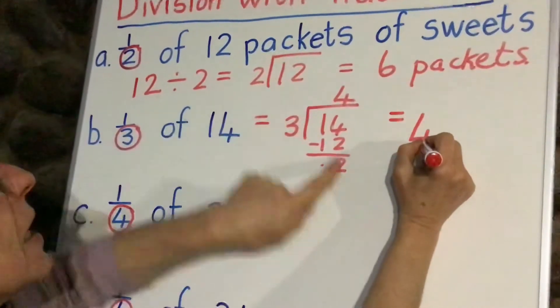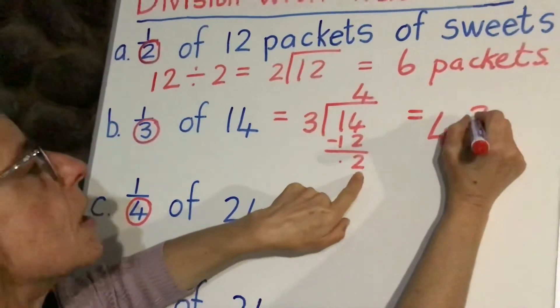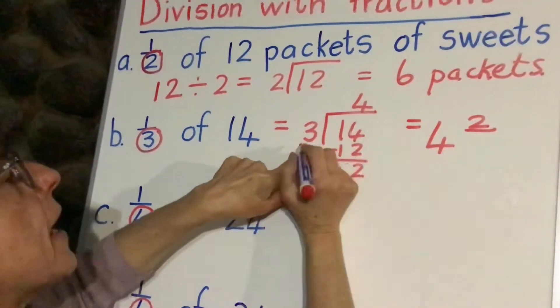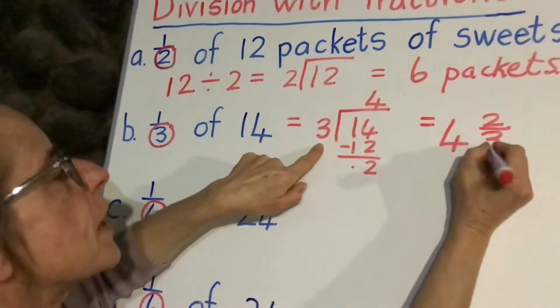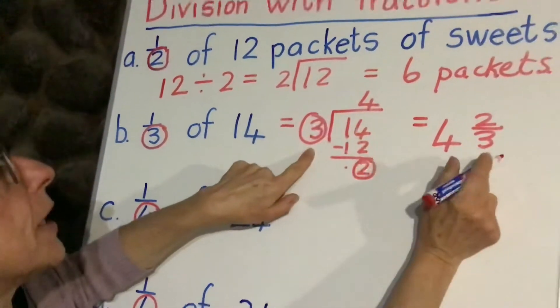This is how we write the answer: remember our answer is always on the top. When there's something left over, please remember that goes on the top of our fraction and that goes at the bottom. So that's our numerator there and our denominator there.